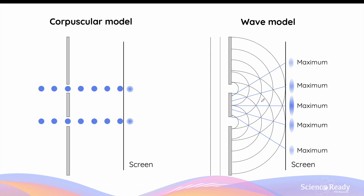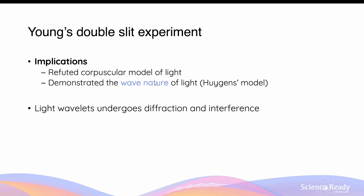In contrast, Huygens' wave model was able to explain that when secondary wavelets pass through the two narrow slits, they undergo diffraction due to the wave nature, followed by interference between these diffracted waves, resulting in multiple bright spots or maxima on the screen. The maxima are caused by constructive interference between the wavelets, and the dark spots — the minima — are produced by destructive interference. Thus, Young's double slit experiment refuted Newton's corpuscular model and supported Huygens' wave model, showing that light as wavelets can undergo diffraction and interference.